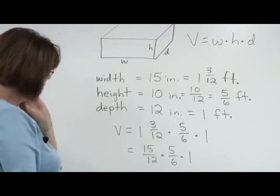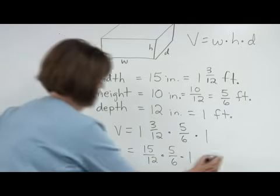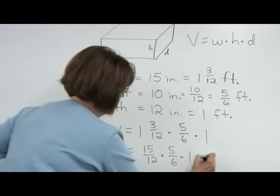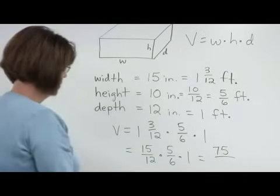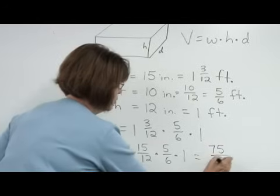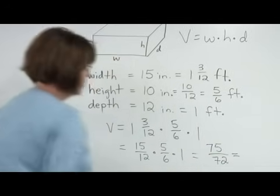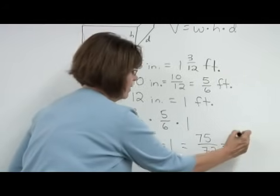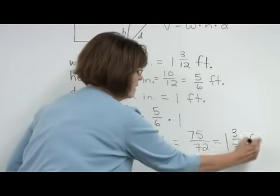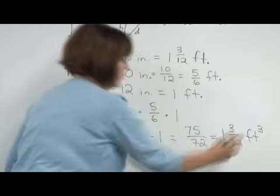So 15 times 5 is 75, and 12 times 6 gives us 72. So it looks like we have 72 over 72 would be 1, 1 and 3 over 72 cubic feet.